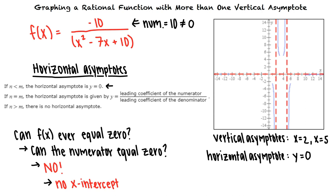To clarify where we are now, the function f of x equals negative 10 over x squared minus 7x plus 10 has vertical asymptotes at x equals 2 and x equals 5, and a horizontal asymptote at y equals 0. Now, to graph the function, we need to plot the x and y-intercepts if they exist, and at least one point on each side of each vertical asymptote.